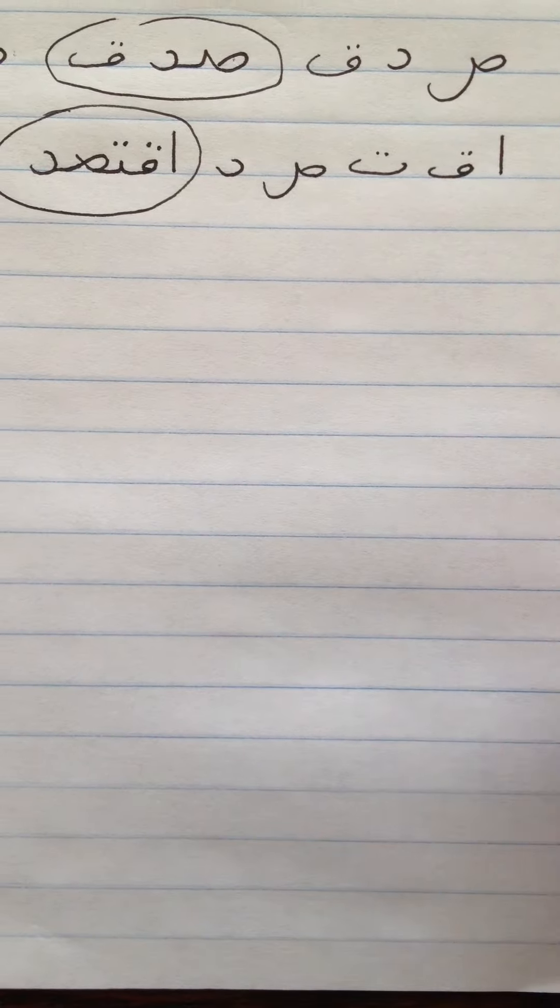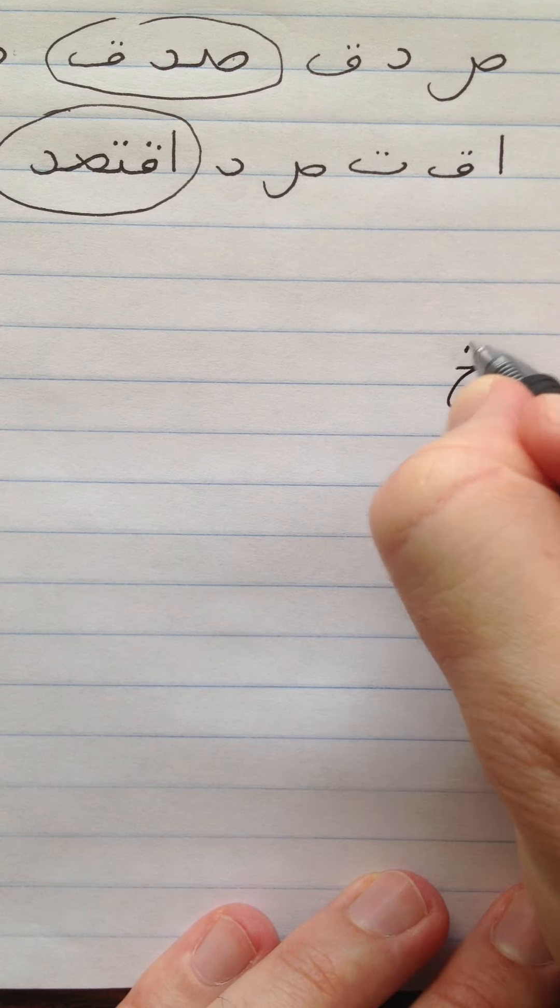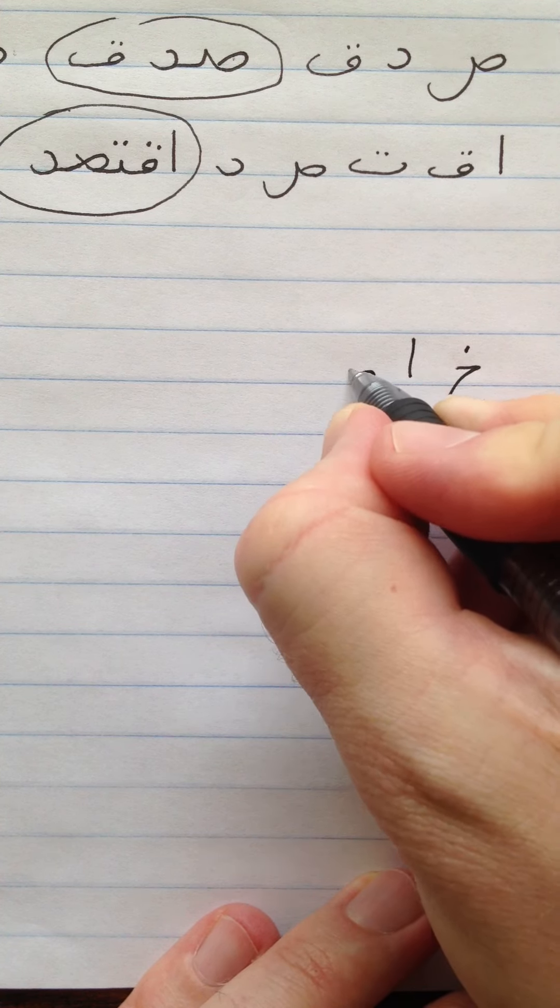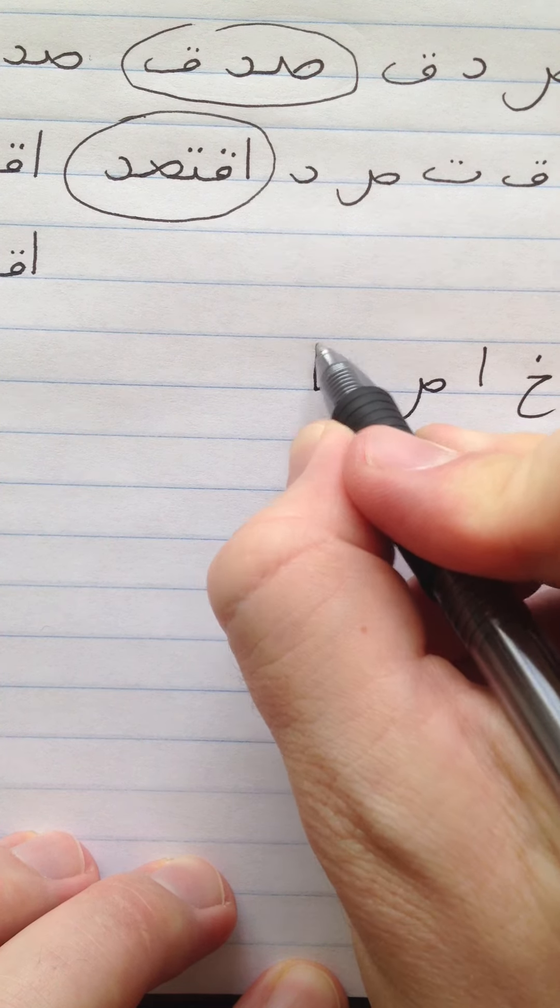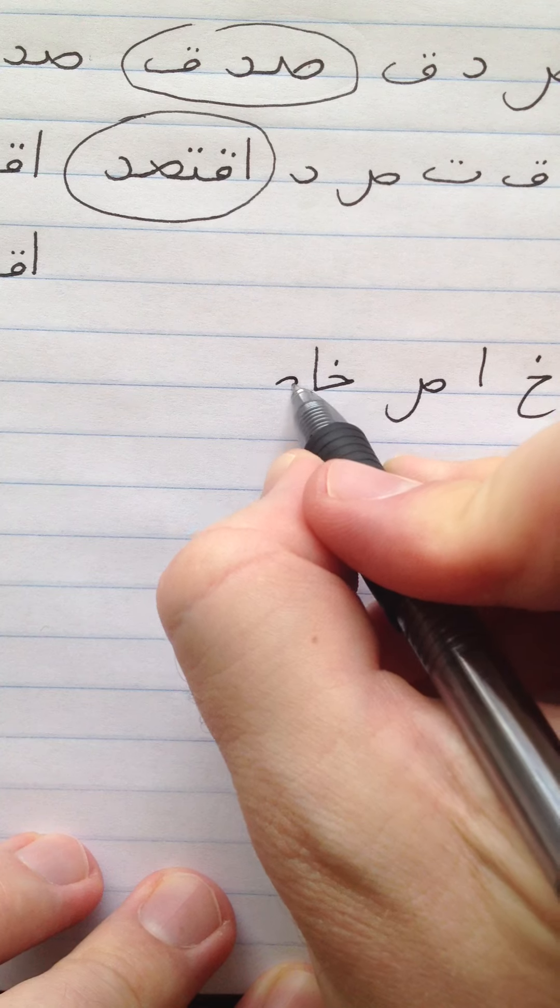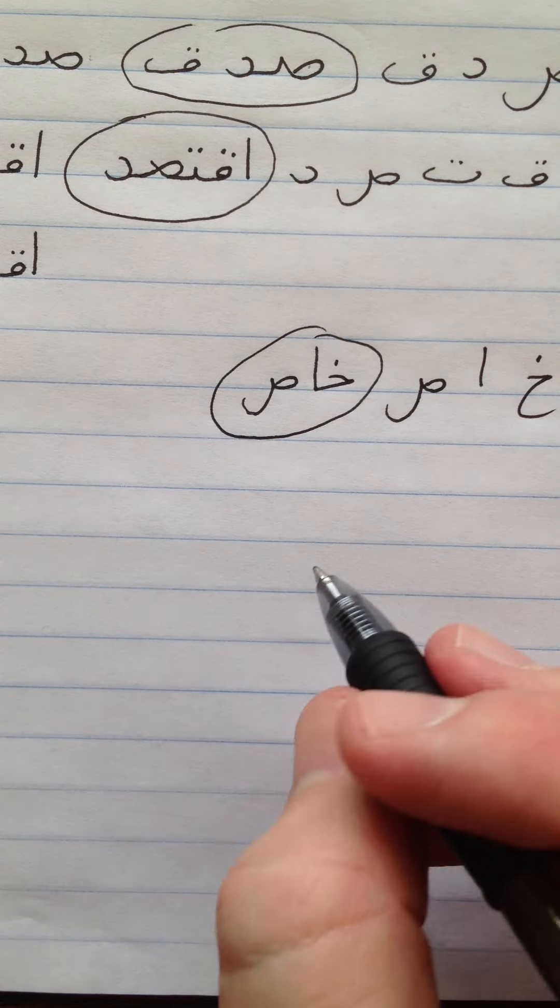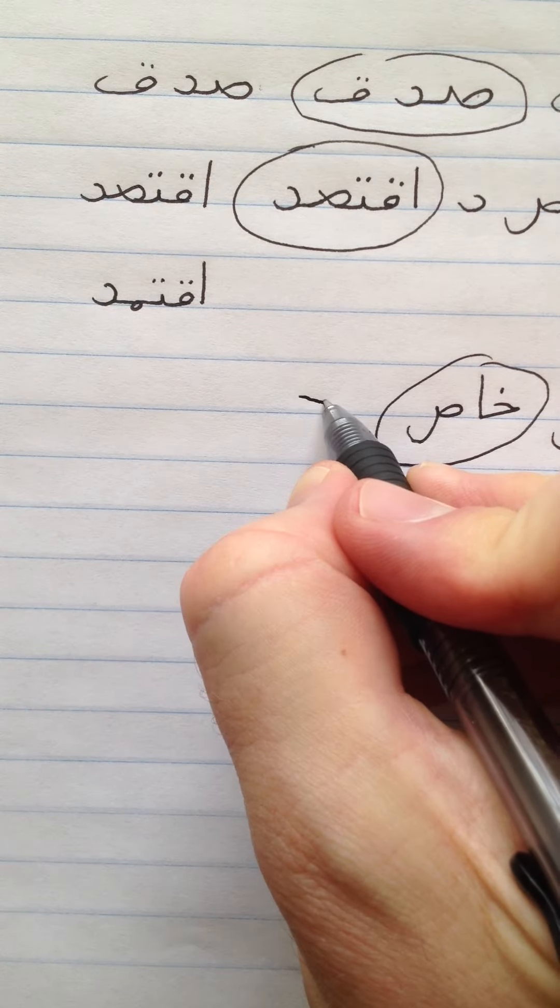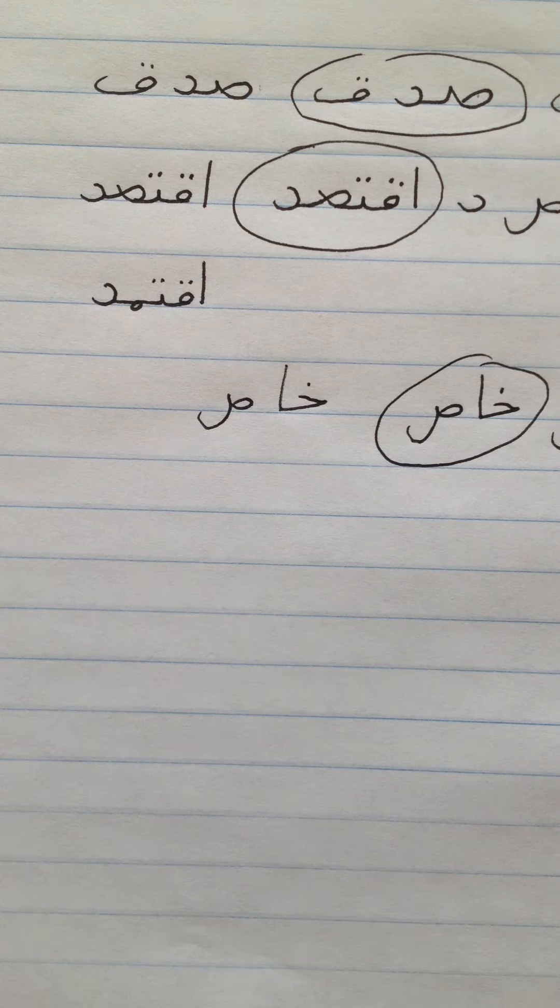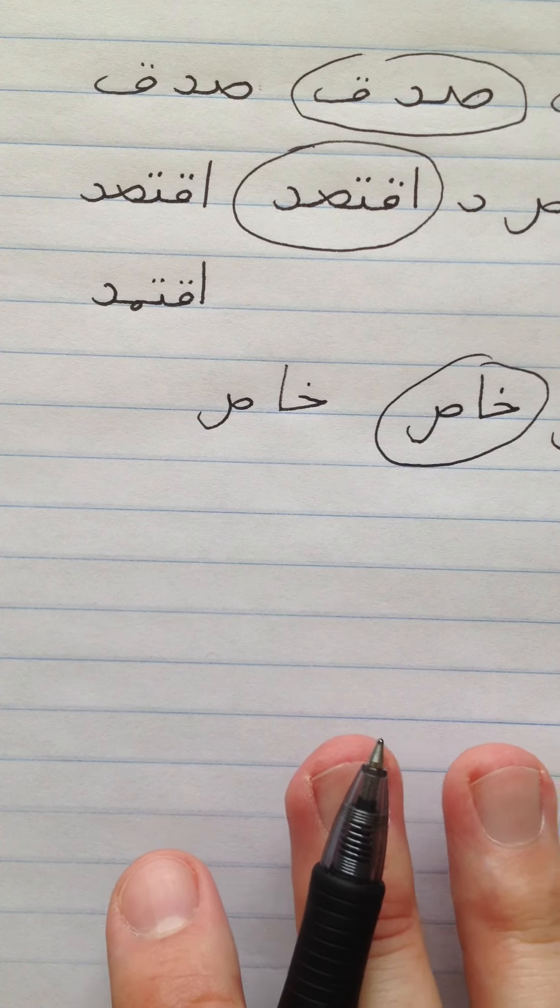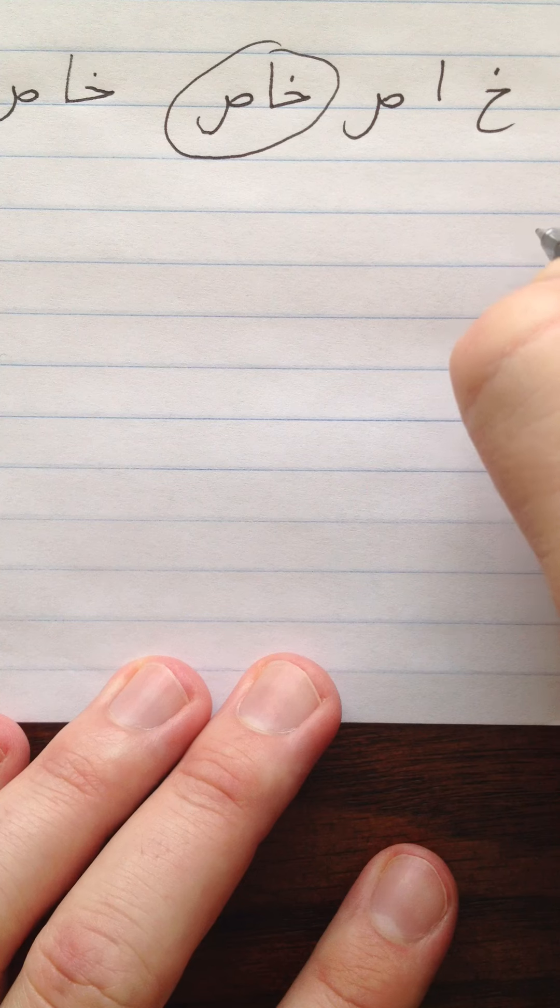Now let's look at another word with Swad. Let's look at the word Khaas. It's spelled Khe, Aleph, Swad. To put these letters together: Khe, Aleph, those two connect, and then Swad stands alone because Aleph does not connect on the left. Khaas. This word means special. Khe, Aleph, Swad. Khaas.